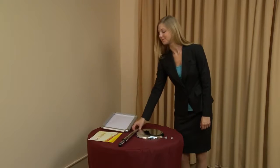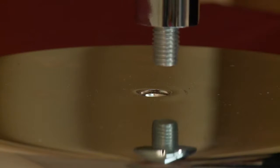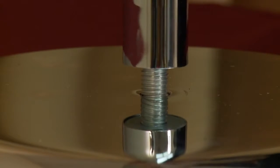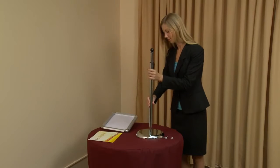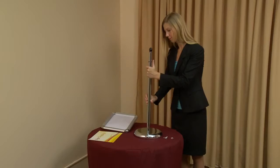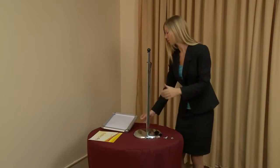To assemble the pedestal snap frame, begin by removing the parts from the box and placing them on a clean flat surface. Insert the threaded end of the pole into the base receptacle and tighten by rotating the pole clockwise.